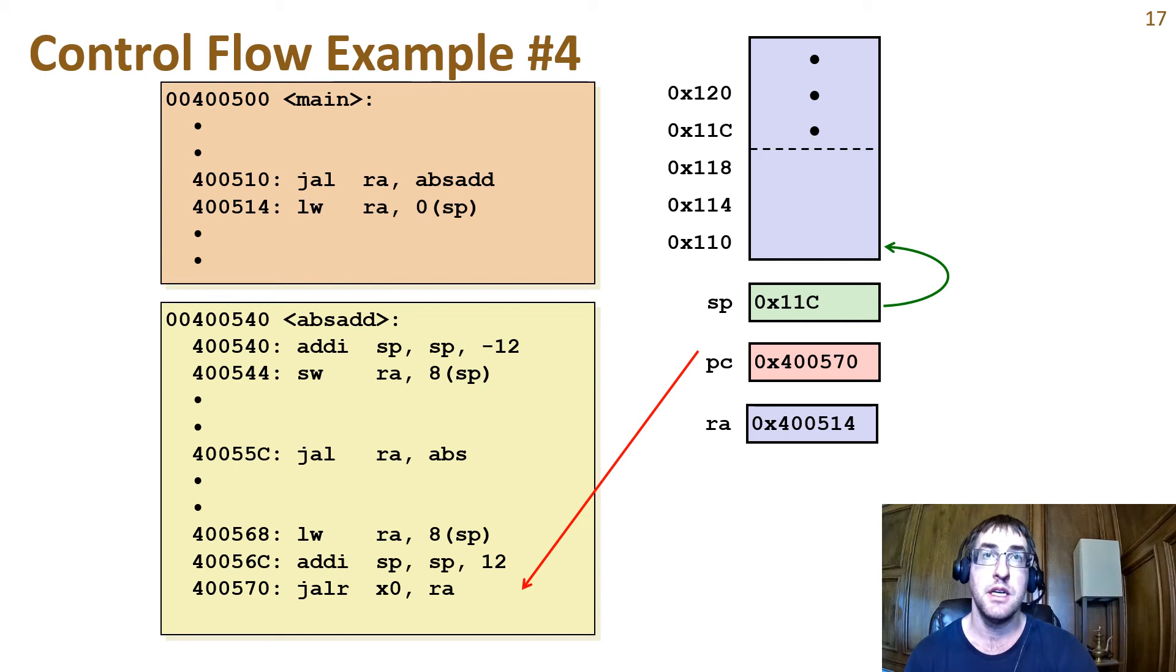And when absadd returns, it will go back to the instruction following the call in main with the stack pointer at the same address as when the call was made.